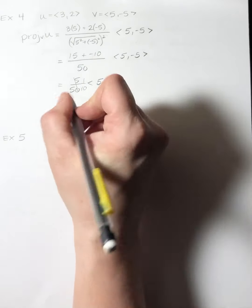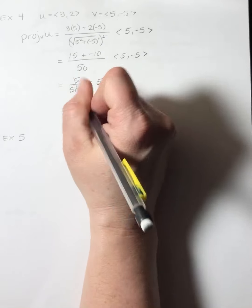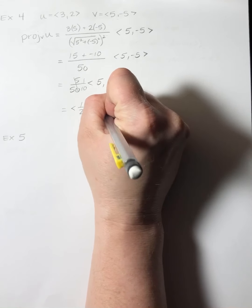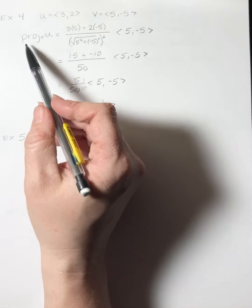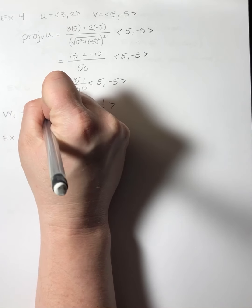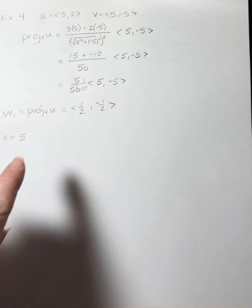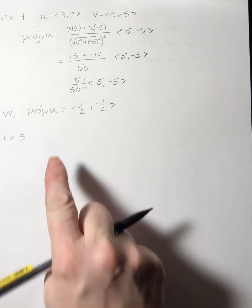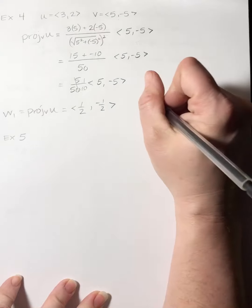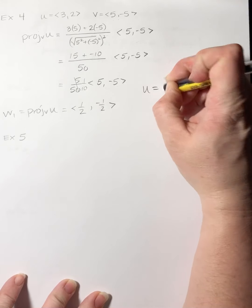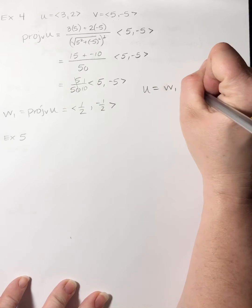Taking 1 tenth times both components: 1 tenth times 5 is 1 half, and 1 tenth times negative 5 is negative 1 half. So the projection, or w sub 1, is (1/2, -1/2). That's the first thing to find. Then it says to write u as the sum of two orthogonal vectors, one of which is the projection. So u equals w sub 1 plus w sub 2.